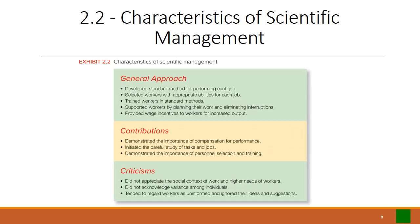The general approach of scientific management can be summed up as looking for a standard method for each job to be performed. You select workers with the right abilities, train them in a standard procedure, and provide a wage incentive for meeting increased output goals. We can't deny that this contributed something valuable — notably how important compensation for performance is, introducing careful study of tasks and jobs, and emphasizing selecting the right person and training them appropriately. Unfortunately, it was not a holistic answer, and criticisms include that it did not consider the social context of work, the higher-order needs of employees, and it really didn't acknowledge workers as individuals or take their suggestions into consideration.